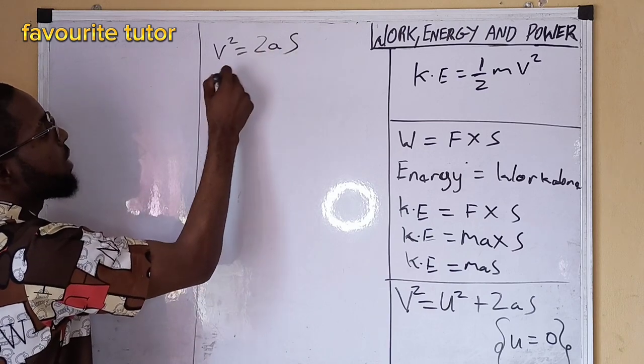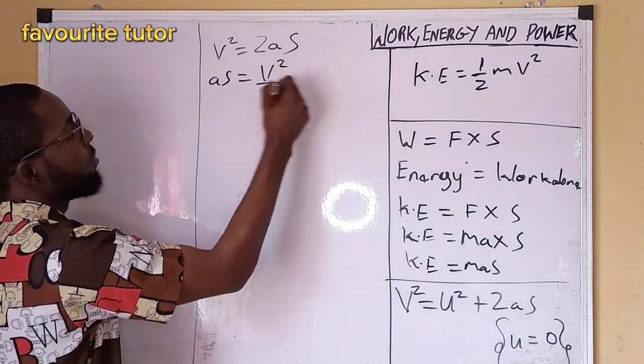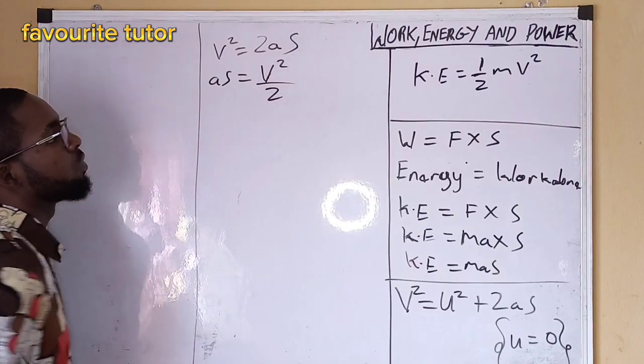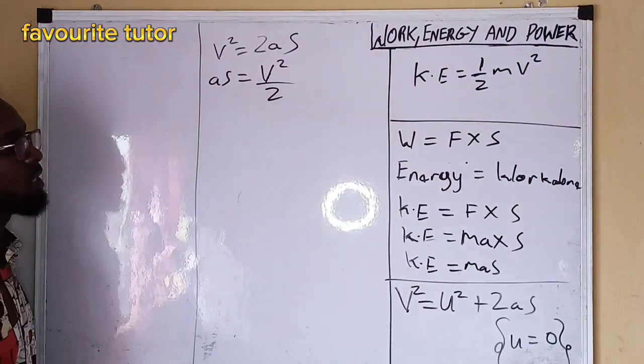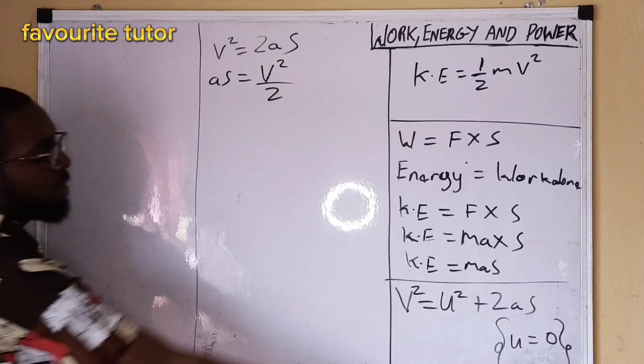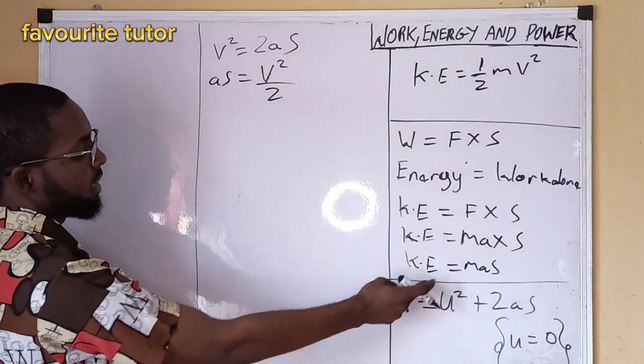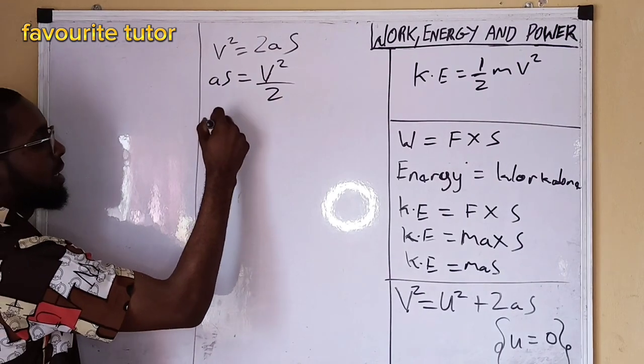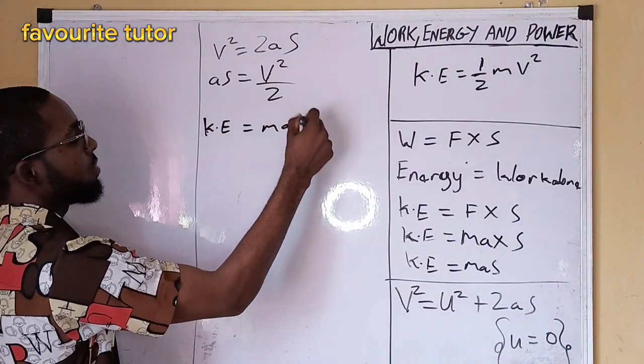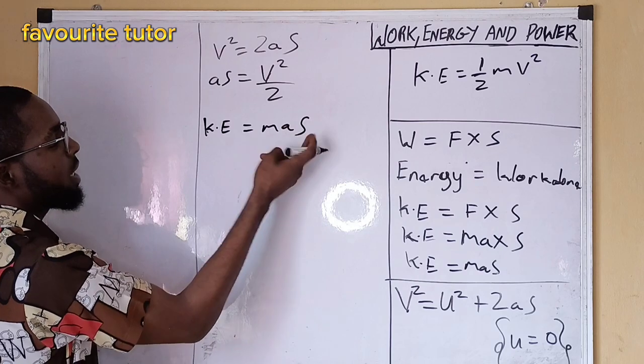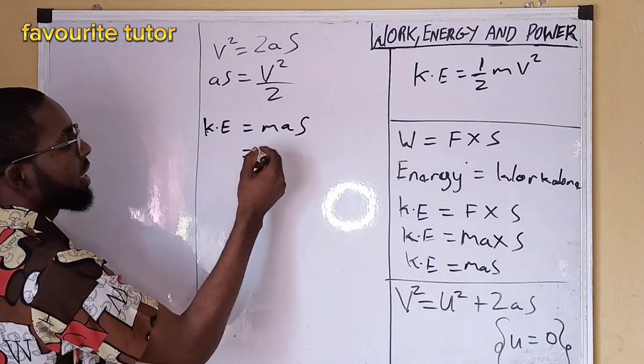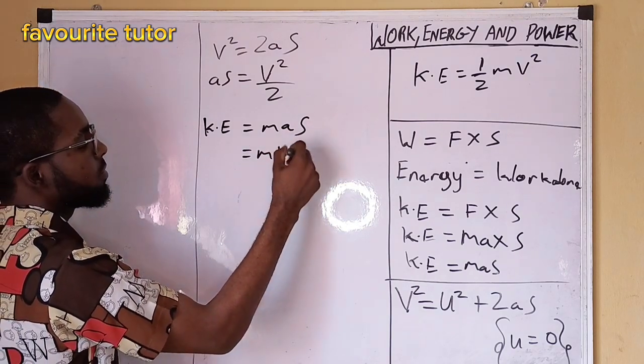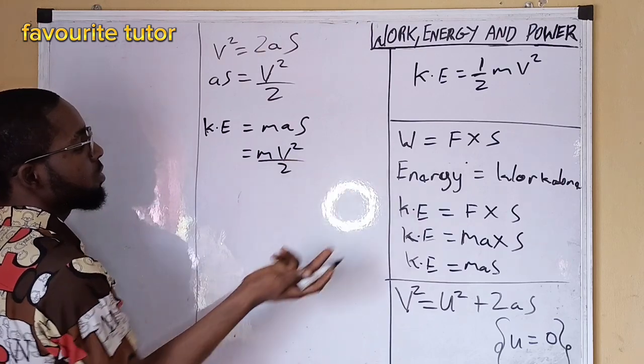Now if I make a s subject of formula, kinetic energy is m a s. So kinetic energy equals m a s, and make a s subject of formula. So what is kinetic energy? m v squared over